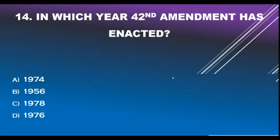Question number 14. In which year was the 42nd Amendment enacted? Option A - 1974. Option B - 1956. Option C - 1978. Option D - 1976. Correct answer is Option D: 1976.